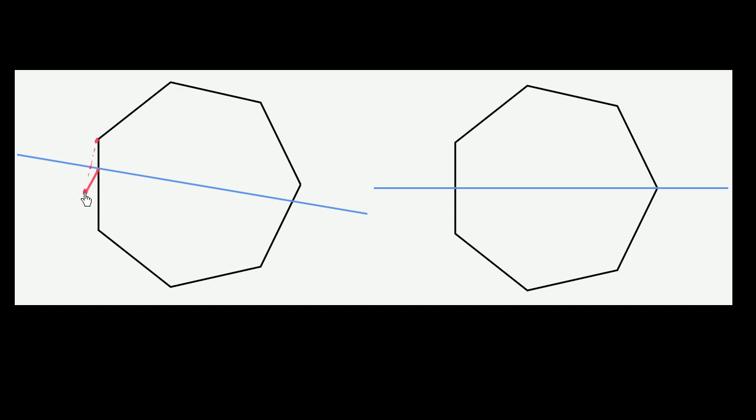So this point, if you reflected it across this blue line, would get you here. This point, we'll do it in a different color. This point, if you were to reflect it across this blue line, it would get you, make sure I can do that relatively straight.